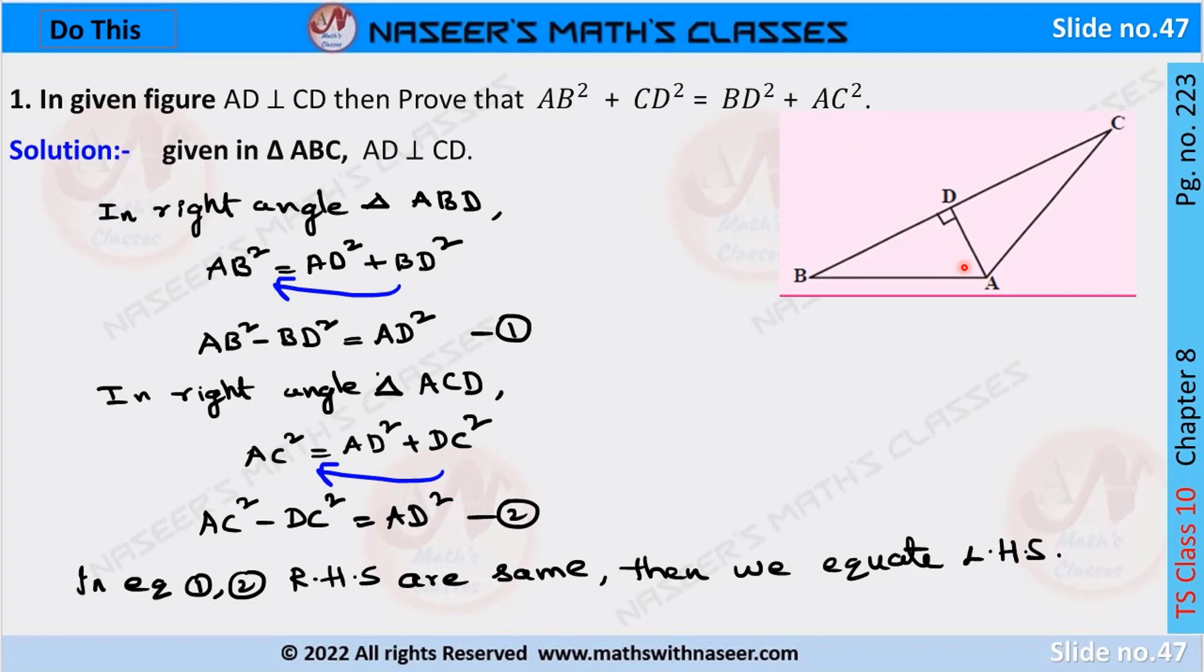By observing the figure, we have two right-angle triangles. The first one is ABD.